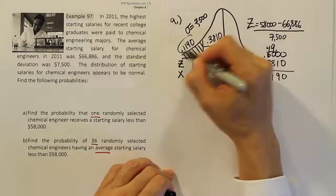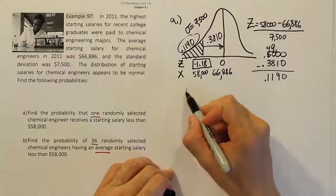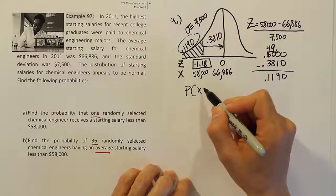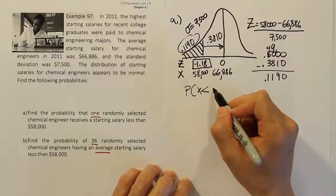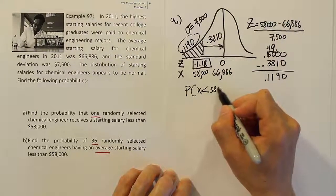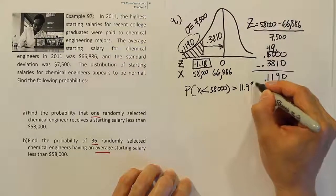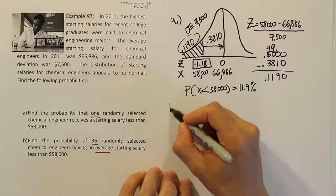So the probability for the first one, the probability that a single randomly selected chemical engineer has a salary less than 58K or 58,000, we end up with the answer 11.9%. Now we're going to look at part B of the problem.